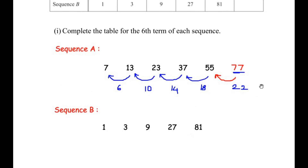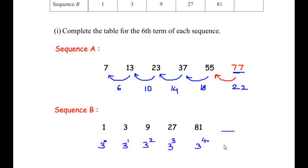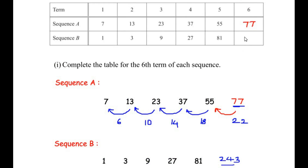Now let us concentrate on sequence B. The terms are 1, 3, 9, 27, and 81. Each term represents a power of 3: 1 is 3⁰, 3 is 3¹, 9 is 3², 27 is 3³, and 81 is 3⁴. So the next term becomes 3⁵, which is 243. The sixth term of sequence B is 243.